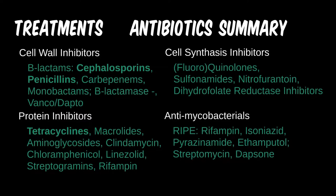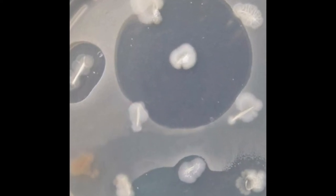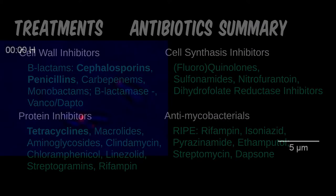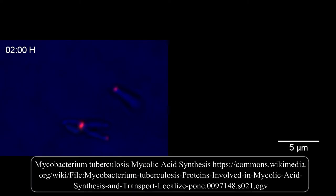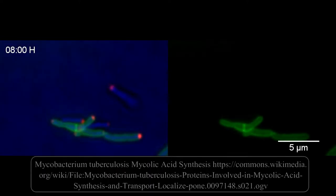Since bacteria try to kill each other, we might as well use their natural weapons against them. Many antibiotics are synthesized from bacterial products. With INH, it specifically inhibits the mycolic acids unique to mycobacterial cell walls — the same acids that make them stain positive with acid-fast stain.